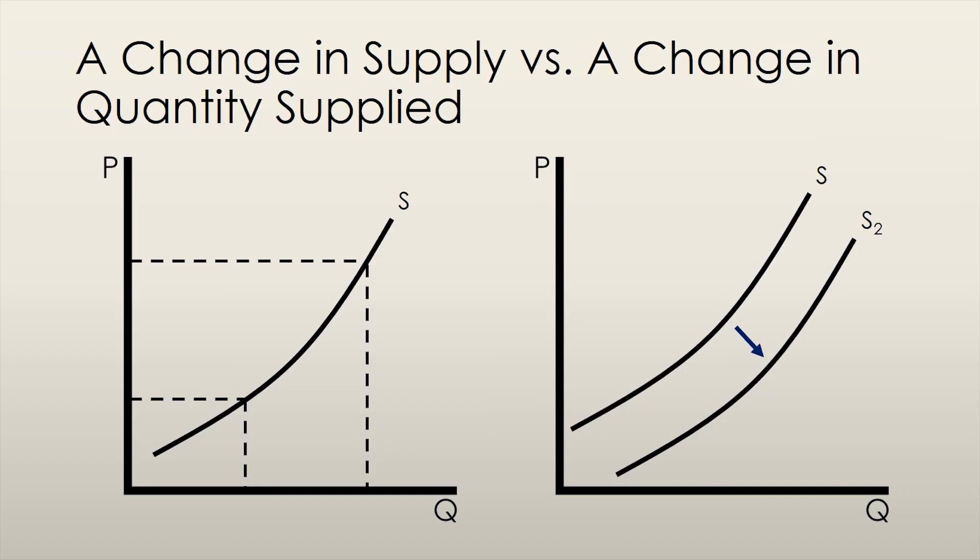When we refer to a change in supply, we are talking about a shift of the entire curve. A shift of the entire supply curve represents a change in the quantity supplied at all possible prices and is caused by the factors that we discussed in the previous slide.